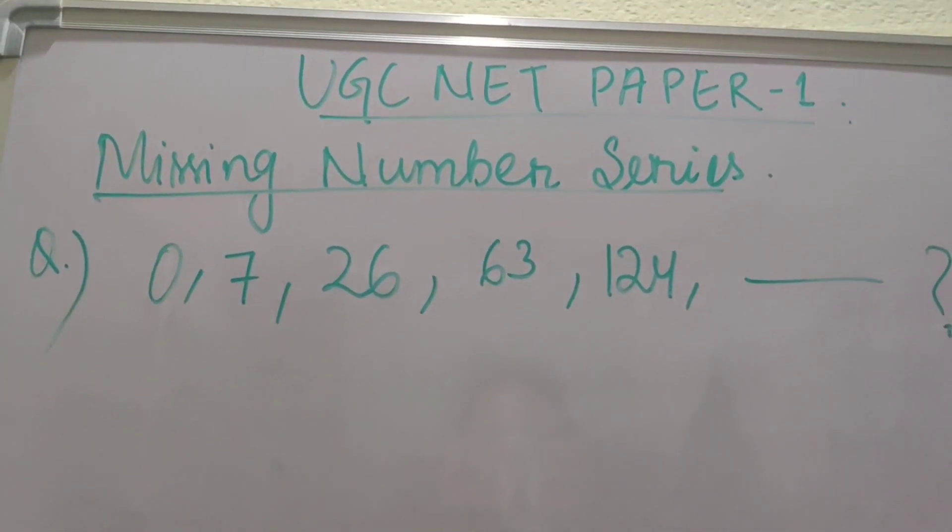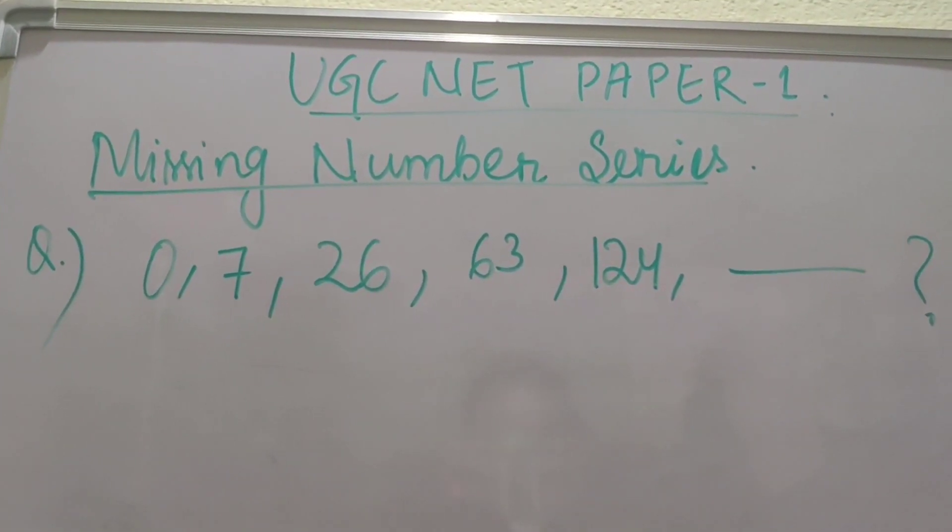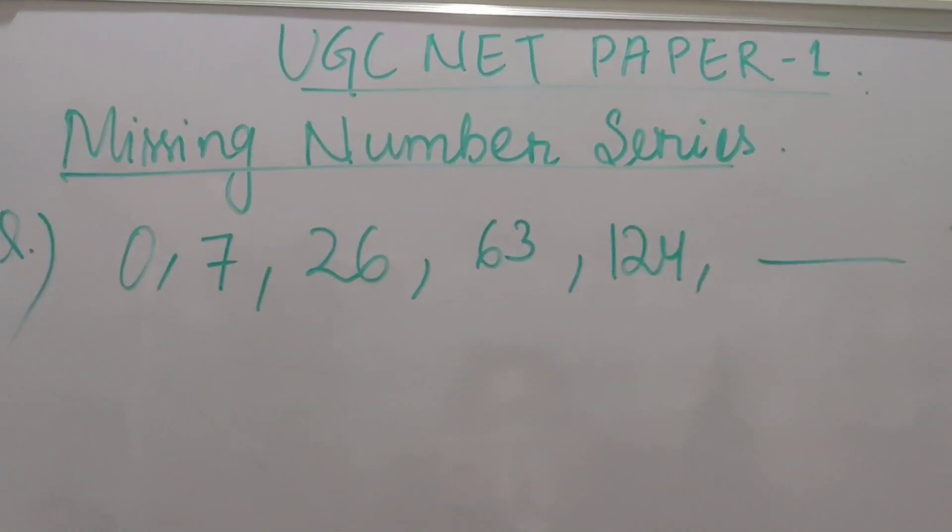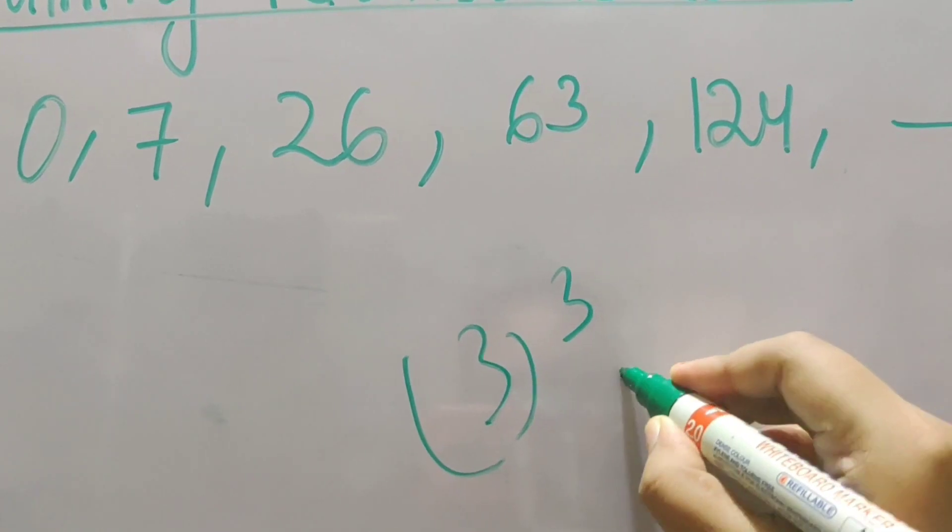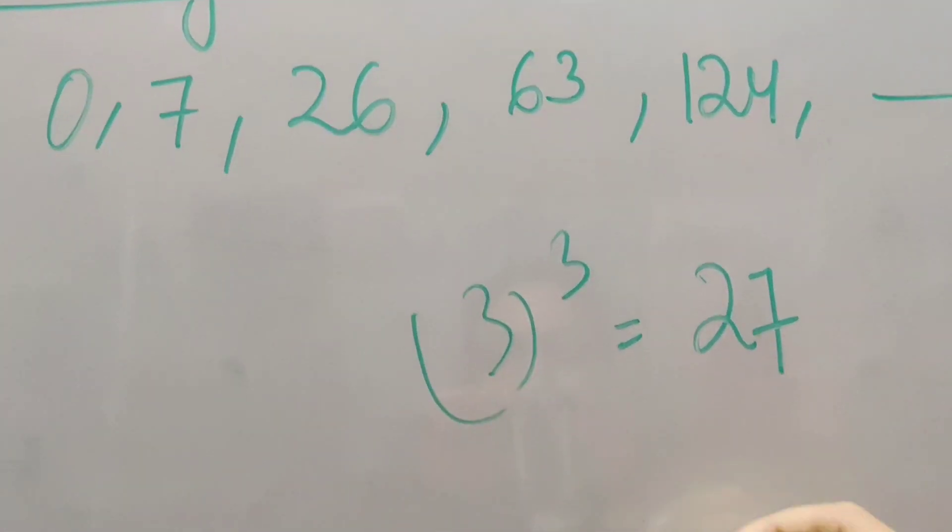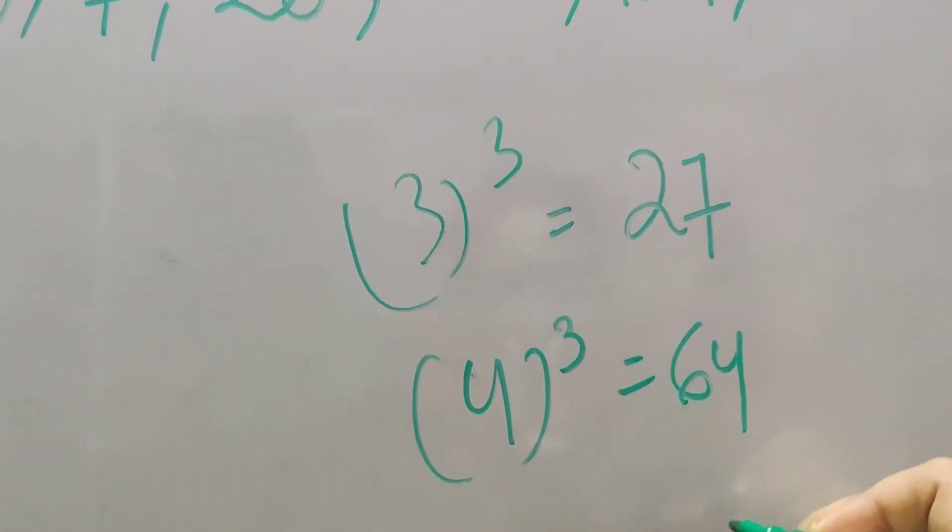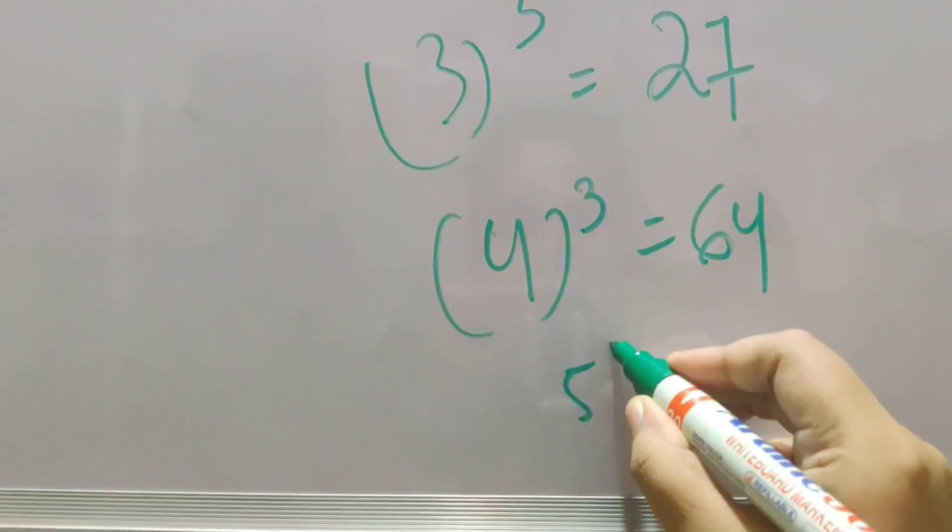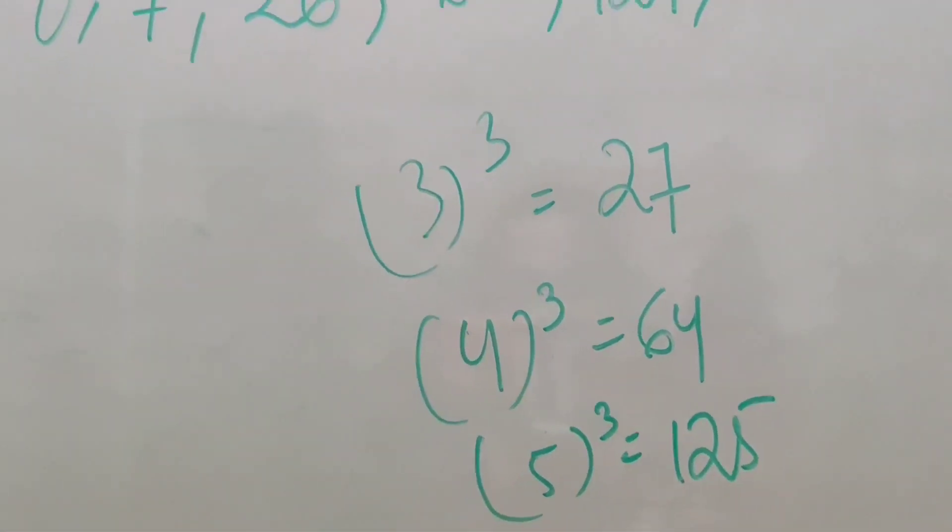For example in this question as you can see you can observe a pattern. We know the cube of numbers, right? We know that the cube of 3 is 27 and the cube of 4 is 64 and the cube of 5 is 125. We know this.